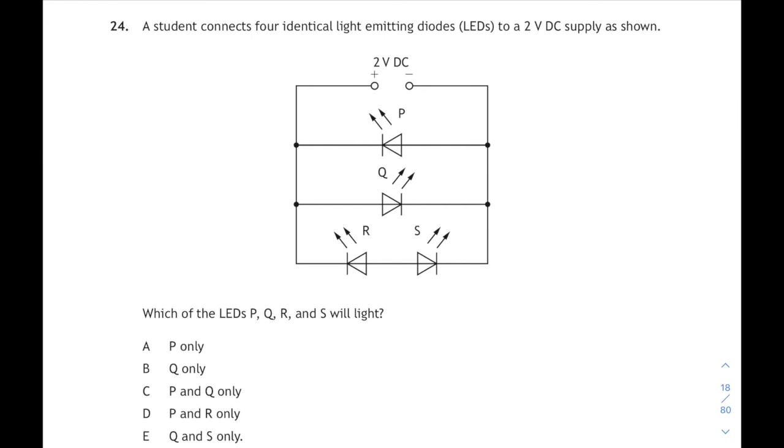24 is a circuit with a number of LEDs in it. We're asked which LEDs will light up. Well, the LED's got to be connected the right way around. And the way you remember it is the tip of the triangle in the LED symbol should always be pointing towards the negative terminal of your DC power supply. So if that was our LED symbol, remember it's always got arrows pointing away from it, then the tip of the triangle should be pointing to the negative side of your supply. So LED P is the wrong way around, it won't light up. LED R is also the wrong way around. And because R is the wrong way around, then no current can flow through S either. Even though S is pointing the right way, no current will be able to pass through it. So it's only going to be Q. That means our answer is Q only. That's 24B.